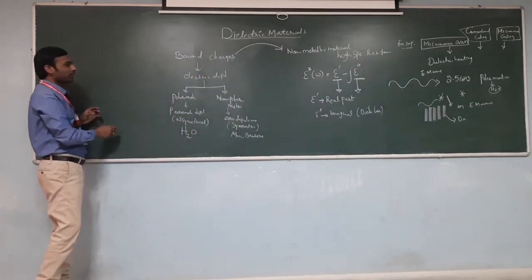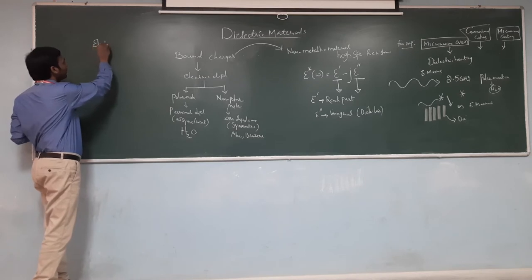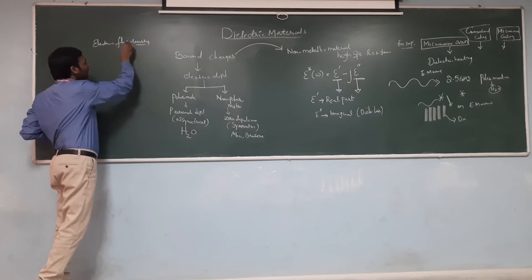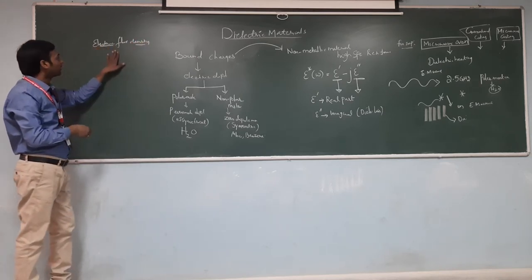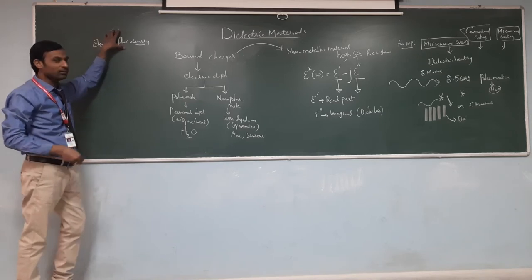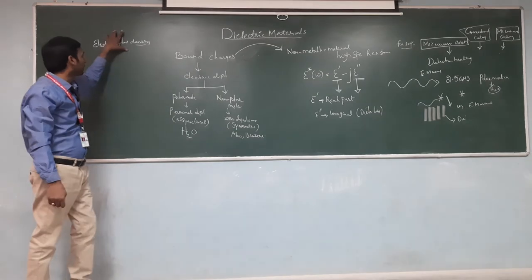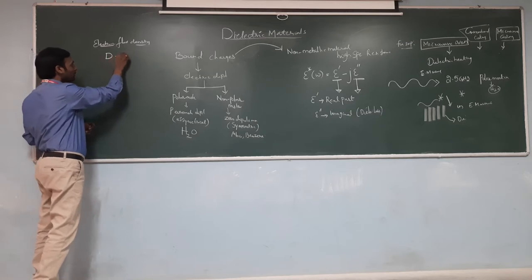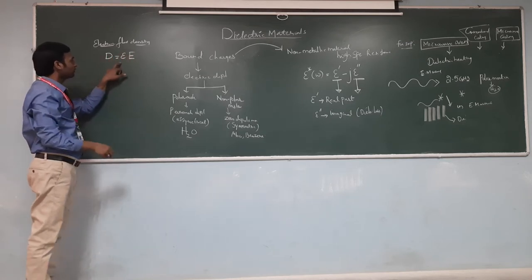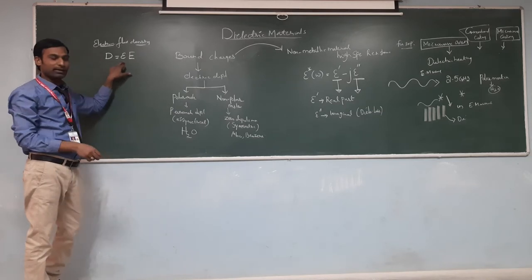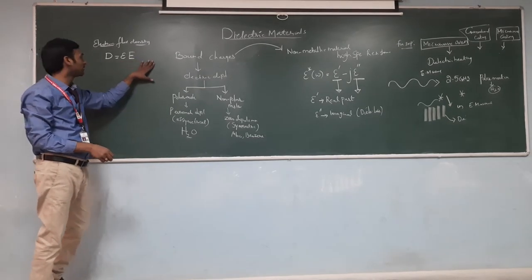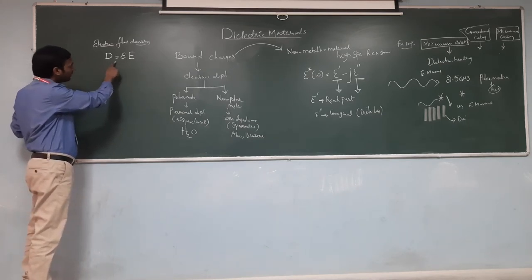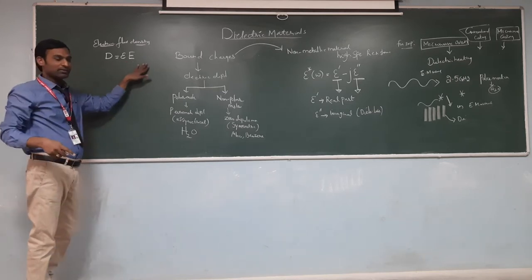Now I am determining electric flux density in terms of dielectric material. Electric flux density means the number of lines per unit area. I represent electric flux density as D = εE. The interaction of electrical energy with matter is determined by the electromagnetic properties of the material. Electric flux density is directly proportional to electric field strength.